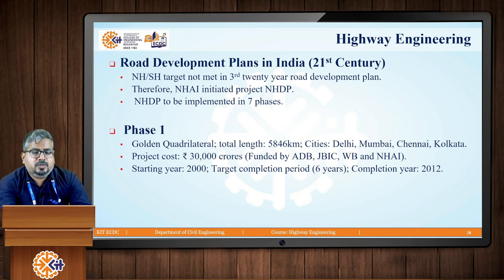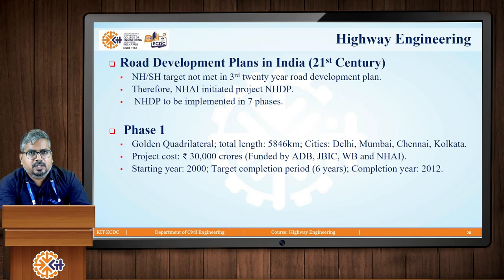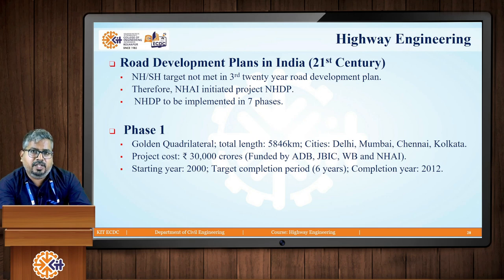Moving on to Phase 1, which is termed as the Golden Quadrilateral. In this case, four different major cities were considered: Delhi, Mumbai, Chennai, and Kolkata. The total road length considered was 5,846 kilometers. The estimated project cost was rupees 30,000 crores, funded by various world-class banks such as the World Bank, Asian Development Bank, Japan Bank of International Cooperation, and the National Highway Authority of India. This phase started in the year 2000 with a target completion of six years, but the actual completion year was 2012.